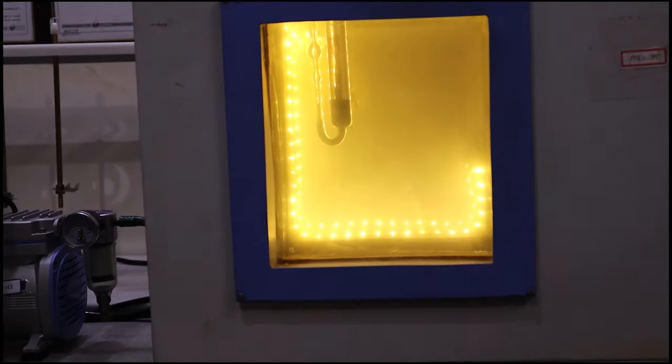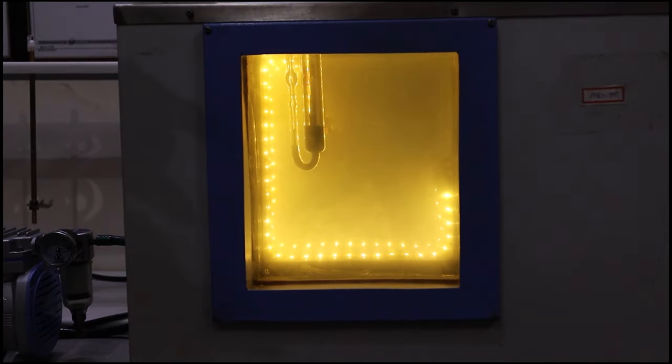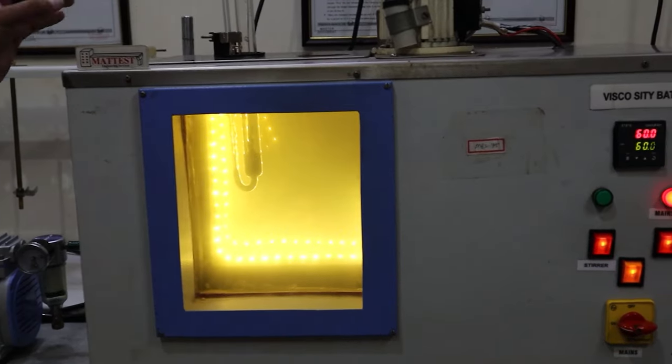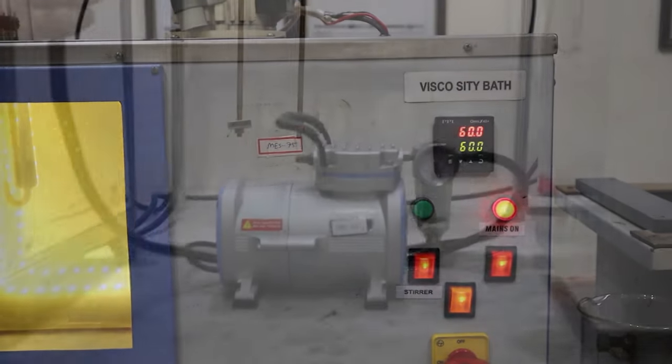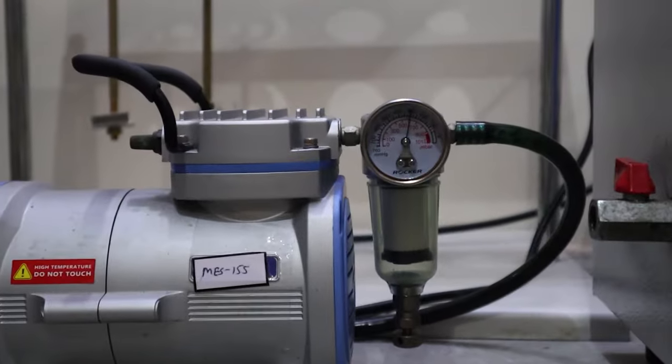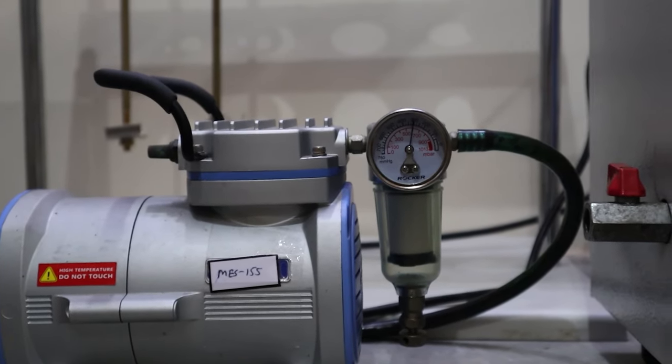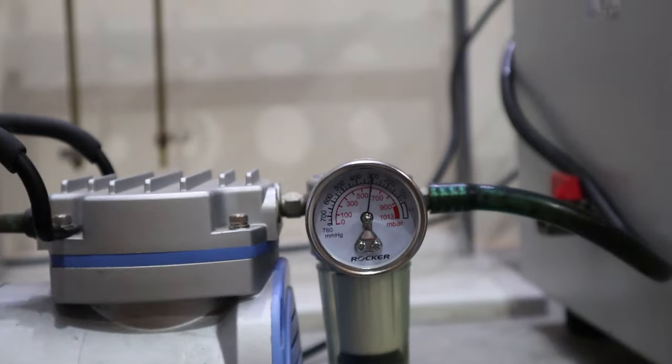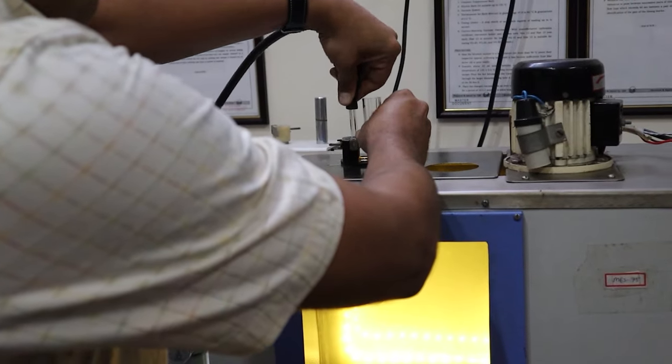After this, the viscometer is shifted to 60 degrees centigrade water bath for 30 plus or minus 5 minutes to maintain the viscometer tube temperature at 60 degrees centigrade. Establish a vacuum of 300 mm plus or minus 0.5 mm mercury in the vacuum system and connect it to the viscometer tube.